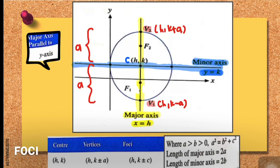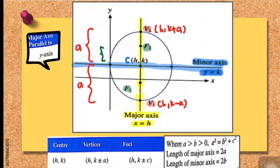Now let's move on to find the coordinates of your foci. You have F1 and F2. The distance between the center and each focus is c — from the center to F1 is distance c, and from the center to F2 is also distance c.